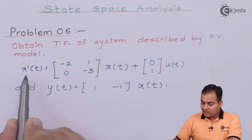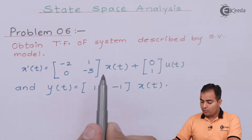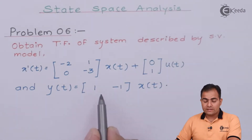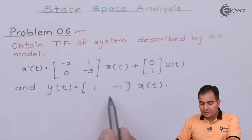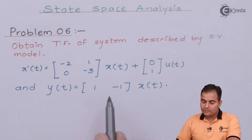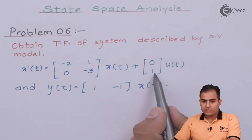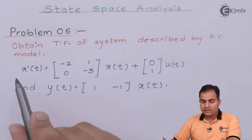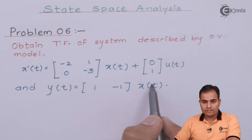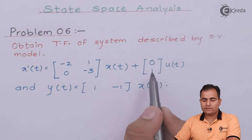The state variable model is given as x-dot of t, which means this is the state variable. To find out the state variables, you can get the idea from the C matrix in y(t). In the C matrix we have two columns, which means we have two state variables. Looking at the B matrix in x-dot of t, we have two rows but one column. Two rows means we have two state variable differential equations.